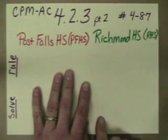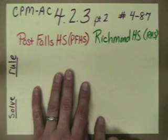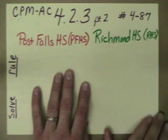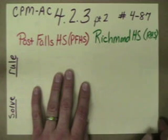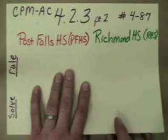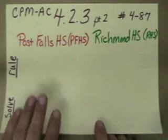Welcome to section 4.2.3 part 2. We're going to do problem 87 in this one. We're not going to go through all of it, but we're going to show how to use that method of equal values on it. The first part of the question tells us not to graph it, to solve it without graphing, and I wanted to show you why.